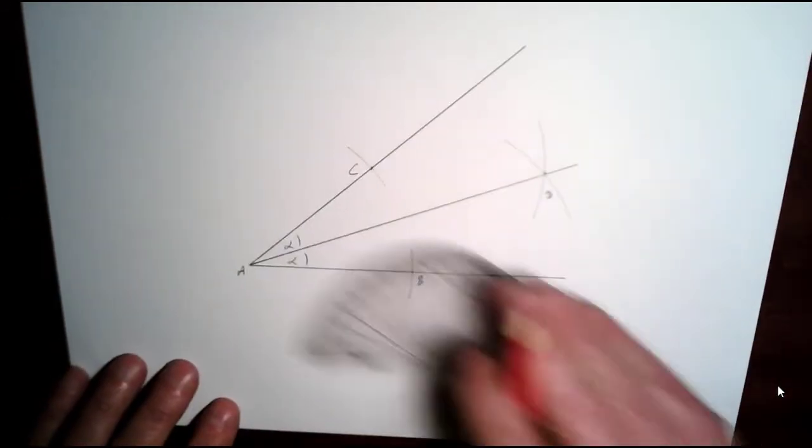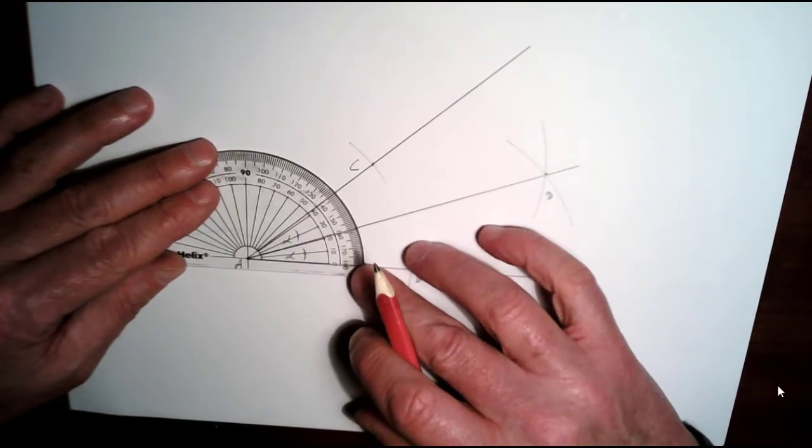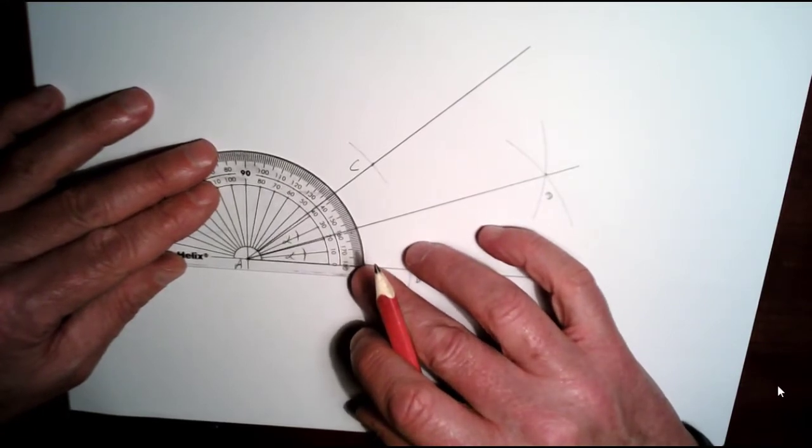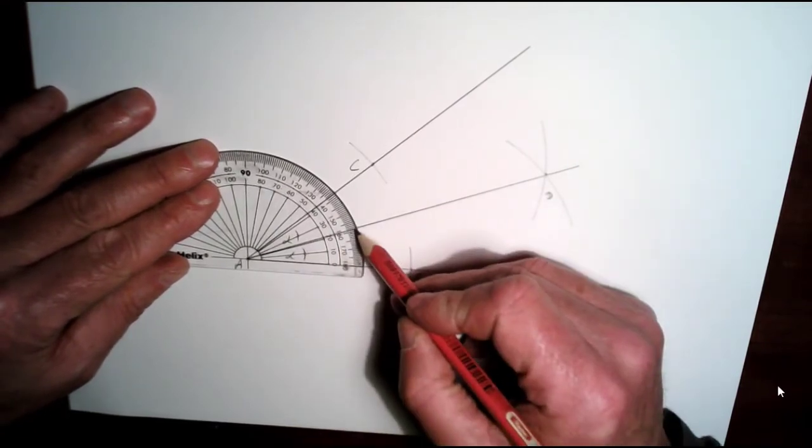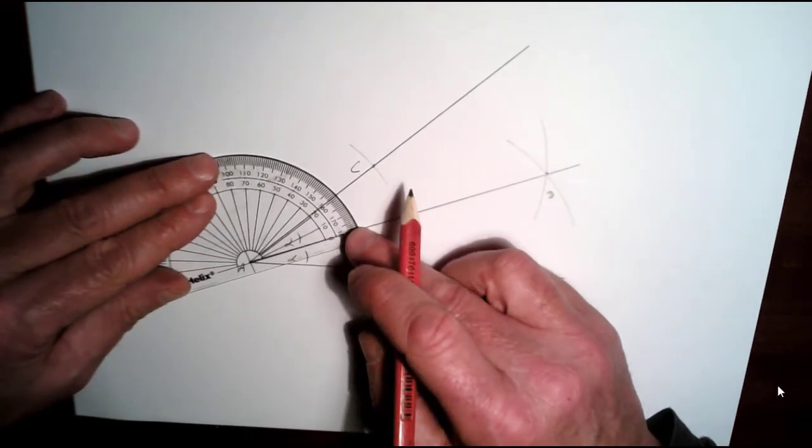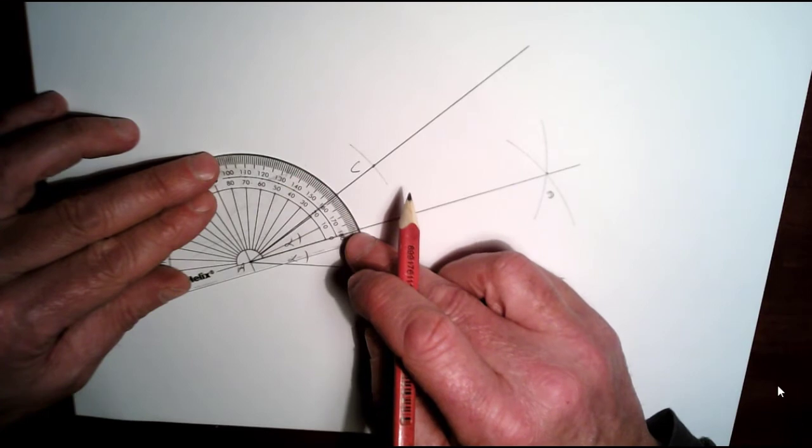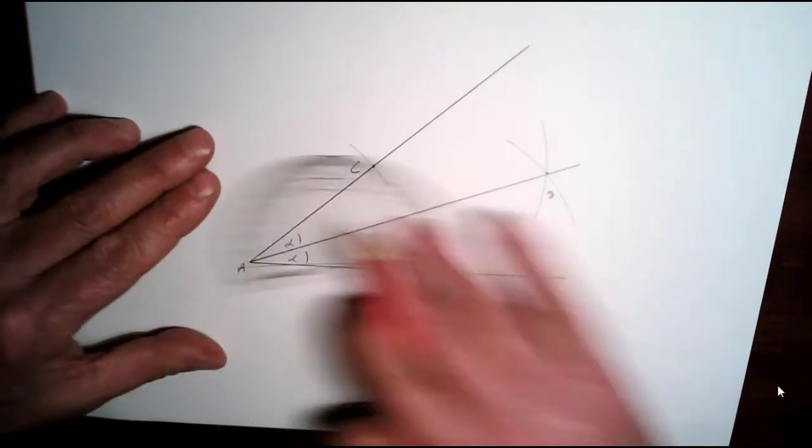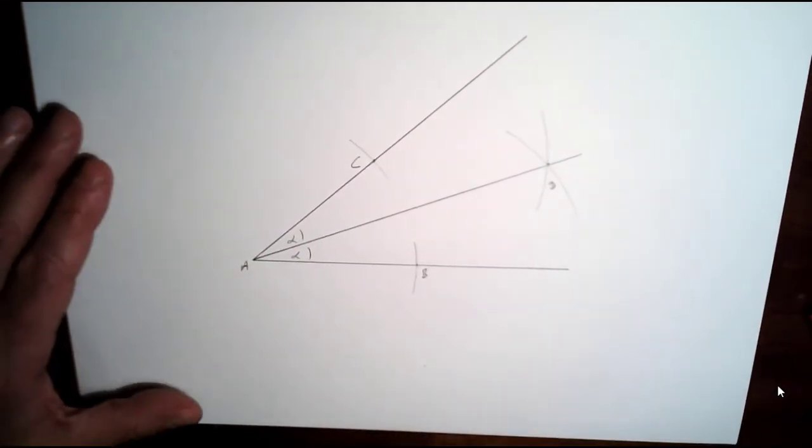So if we were to measure them, let's see, our first angle here is about 21 degrees. Look at our second angle. Again we have about 21 degrees here. So both these angles are the same.